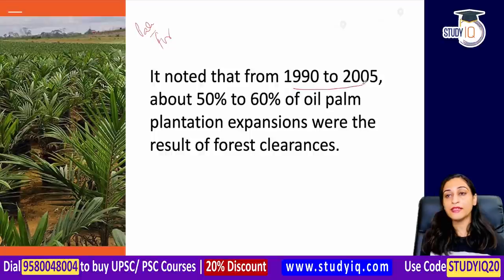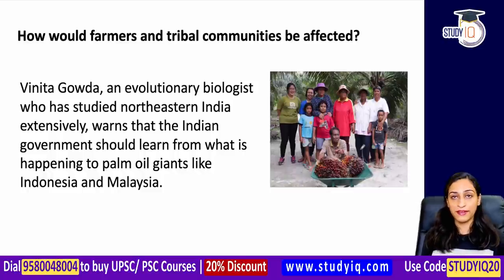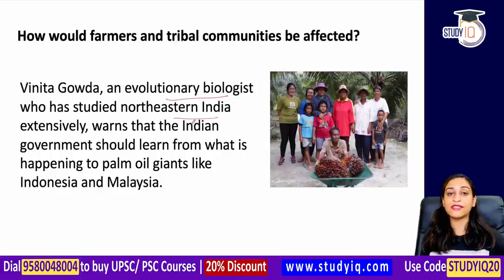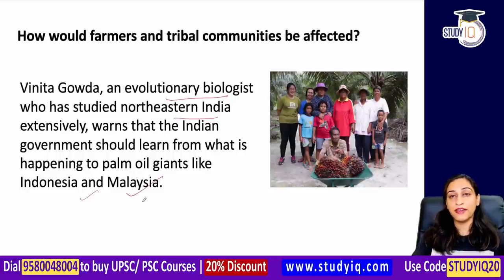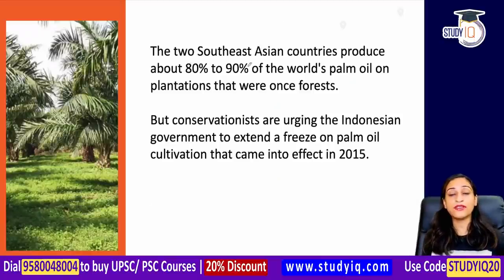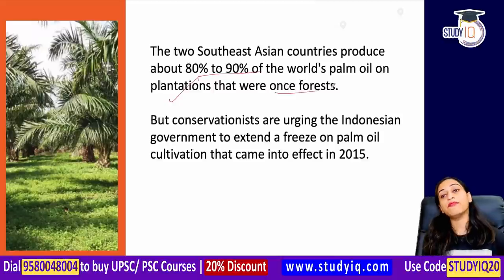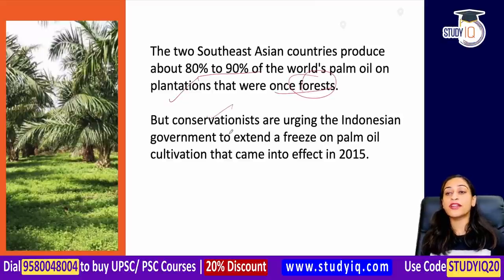From 1990 to 2005, oil palm expansion was 50-60%, but as a result, a lot of forests were cleared. Farmers and tribal communities will also be affected. Vanita Gouda, an evolutionary biologist who has studied North East India extensively, warned that we can learn from Indonesia and Malaysia. South East Asian countries produce around 80-90% of the world's palm oil. Farmers there produced from plantations which were always forests — they cleared them and were able to produce so much oil, but now conservationists are urging the Indonesian government to freeze palm oil cultivation.